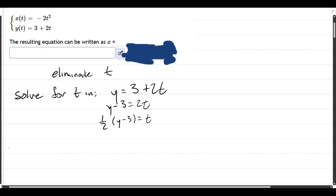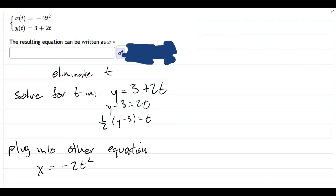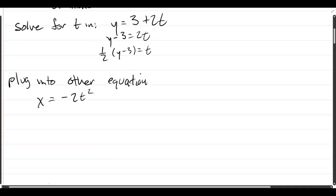So now we're going to plug this into the other equation, which is, now it's just x equals negative 2t squared, and we have to very carefully plug what we just got in where we see t. So we have to put all the one-half times y minus 3, all of that stuff squared.